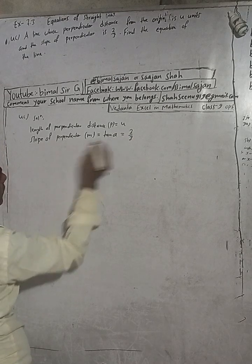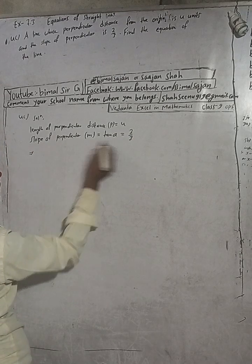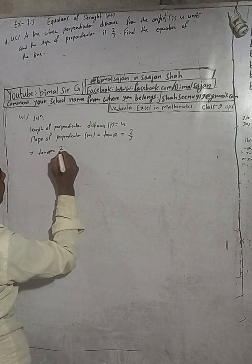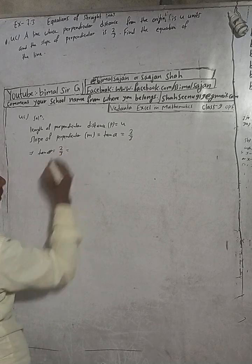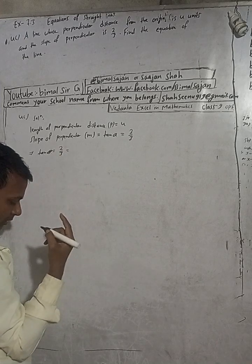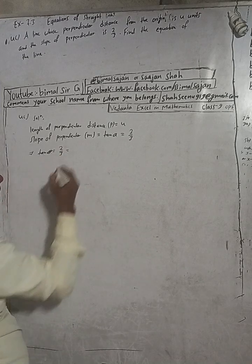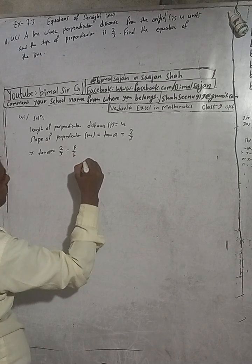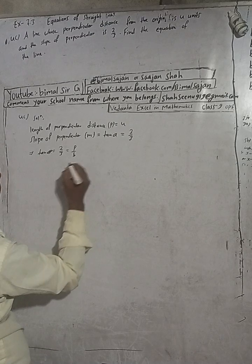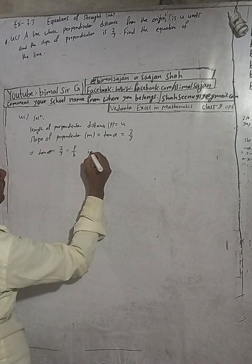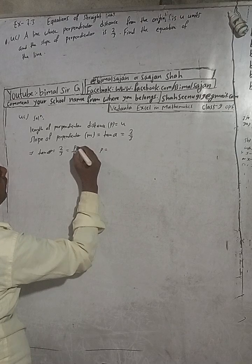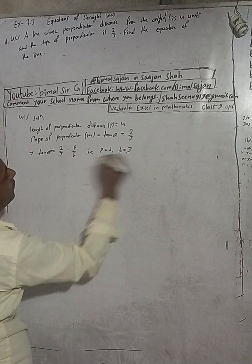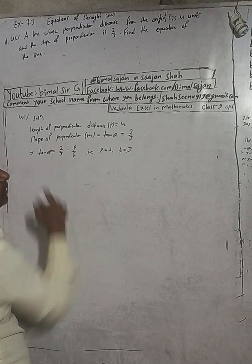This implies tan alpha is equal to 2 by 3. So 2 by 3 means — the formula for tan alpha is perpendicular by base, that is P by B. So this implies perpendicular P is equal to 2 and base B is equal to 3.